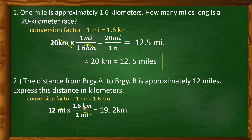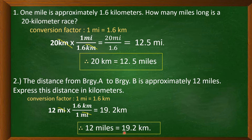Now we simplify. First, cancel out the common unit — mile and mile. The remaining unit is kilometer. So 12 times 1.6 equals 19.2. Since the denominator is 1, no division is needed. The unit is kilometers. Therefore, 12 miles is equal to 19.2 kilometers.